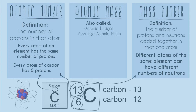Anytime you see your atomic symbol with two stacked numbers, the top one is always the mass number. The other way you're going to typically see mass number is when you have the element name completely written out followed by a dash — that's a dash, not a negative sign — and then a number. That number is also the mass number. So carbon-13 and carbon-12: the 13 and 12 are the mass numbers.